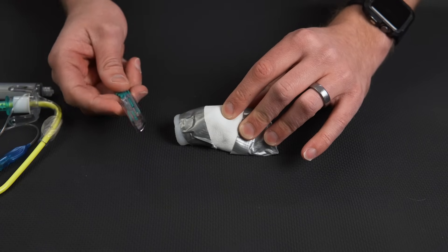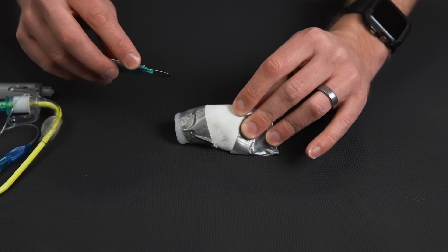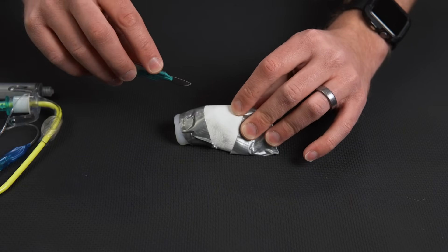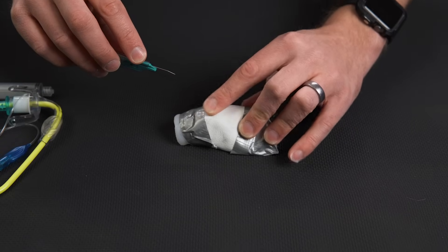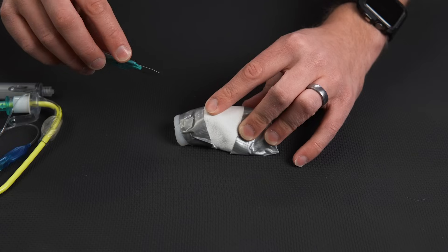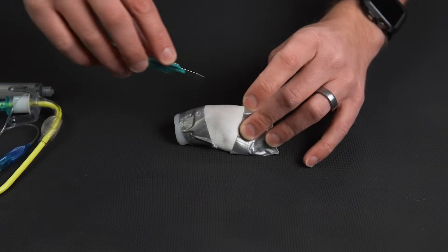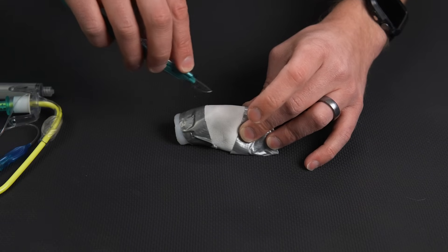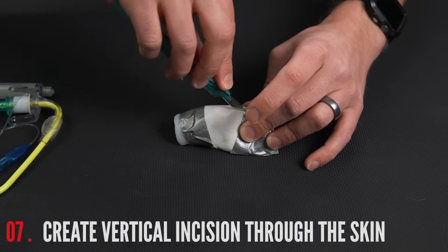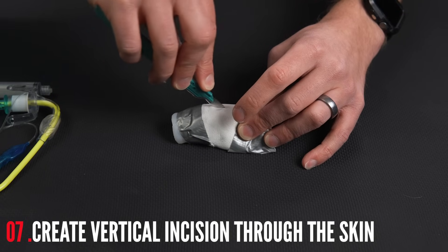I've got my scalpel here. This is the traditional technique. You can take the scalpel and the first thing we're going to do is start just above that membrane and we're going to do a vertical incision through the skin, but not all the way to the membrane. We're not going through the membrane yet. So this is not painting. I'm not going to do a bunch of strokes. We're going to cut down.